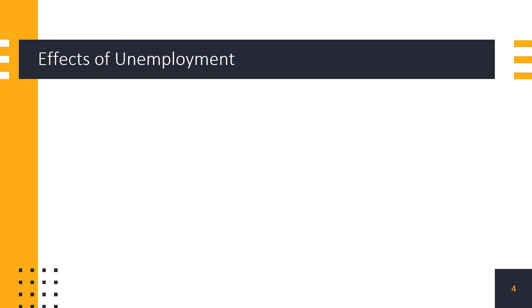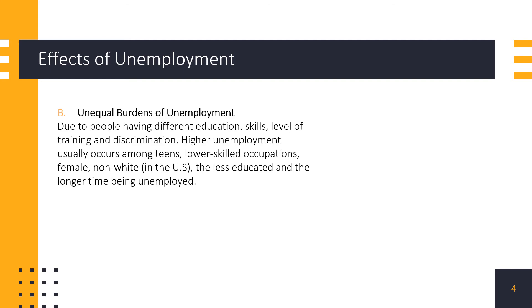Another effect or cost of unemployment is that it affects people differently. When people become unemployed, not everyone experiences the same burden, because people have different education levels, different skill levels, and different levels of training, and there is also the element of discrimination in the workplace. It has been reported that higher unemployment normally happens among teens, those at the lower end of the occupation scale, females, non-whites in the US, the less educated, and those who have been unemployed for longer periods.